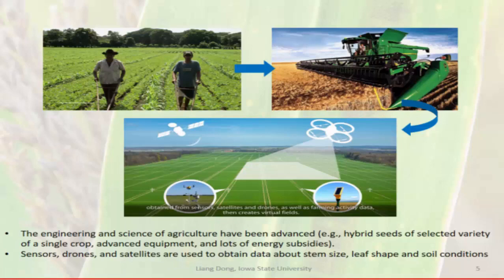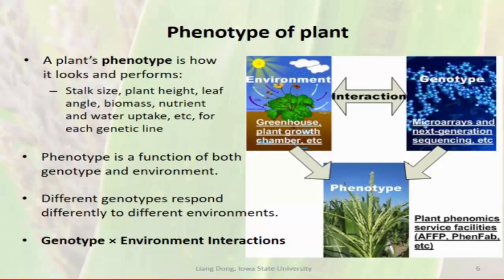Recently, precision agriculture relies on sensors, drones, and satellites to obtain data about phenotypes of plants—for example, stem size, leaf shape, biomass, and so on. My interest is in applying sensor and microfluidic technology for plant phenotyping.